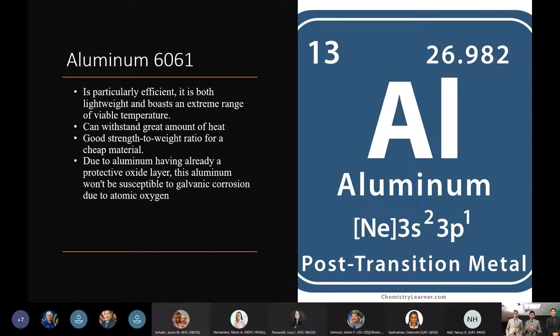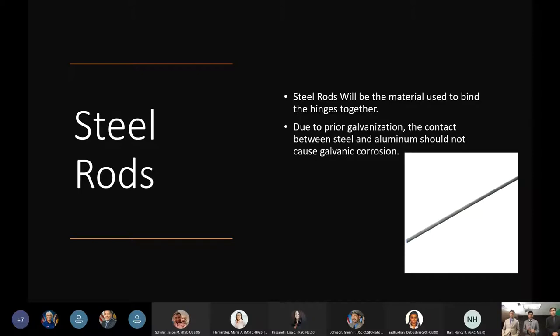For the actual panels, we're making them out of aluminum 6061 because compared to other metals they're very lightweight, have a great strength-to-weight ratio, and since they already have a protective oxide layer they won't be susceptible to galvanic corrosion from atomic oxygen. The actual pins for the hinges are going to be made of stainless steel rods because they're stronger than aluminum, and with galvanization they won't be susceptible to corrosion either.